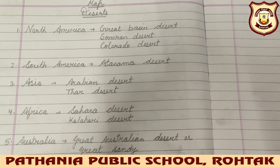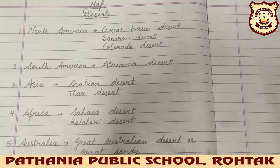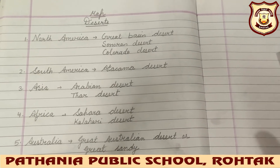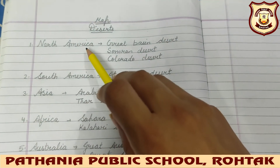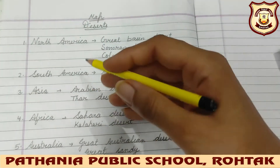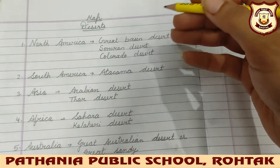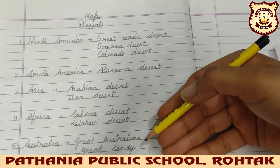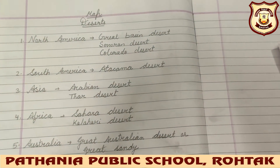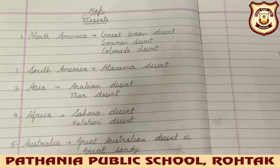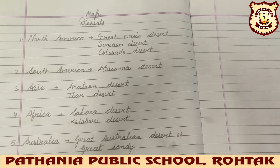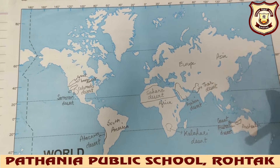This list is very important. The reason for making it is: when we will be filling the map, we need to remember which desert comes in which continent. So if you make this continent-wise list and learn it a little, it will be easy for you — when the map is in front of you, you will know which desert is in which continent. So let's move to the map.